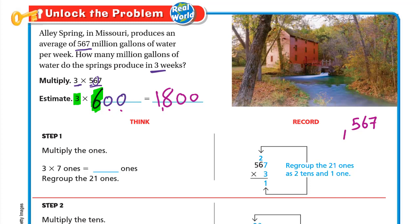We write 567 up and multiply by 3 below. Just as we did in multiplying by two digits, we start by ones, then tens, then hundreds. 3 times 7 is 21, so write down 1 and carry up 2. Now multiply 3 by 6: 3 times 6 is 18, plus 2 equals 20. Write 0 down and carry up 2.